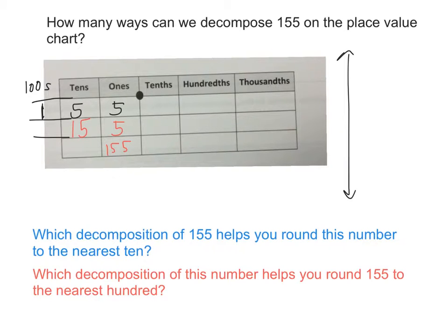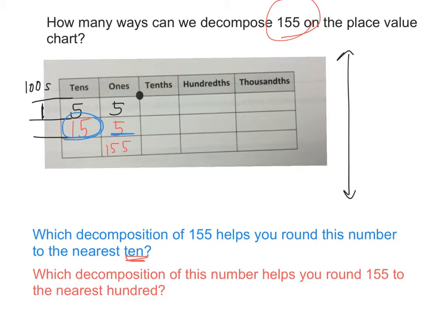Now, what if I said I want to round this number 155 to the nearest ten? Which one of these three compositions would help you best round the number to the nearest tens? Does this one help us — one hundred fifty-five, one hundred, five tens and five ones? We're trying to round it to the nearest tens place.